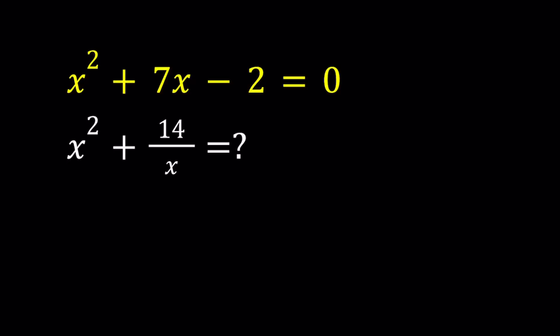Hello everyone. In this video, we're going to be simplifying an expression using a quadratic equation. So we have x squared plus 7x minus 2 equals 0, and we're supposed to evaluate x squared plus 14 over x. We're going to be finding a numerical value for this, and I'll be presenting two methods.